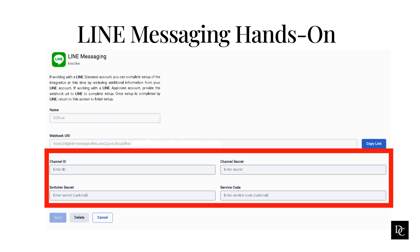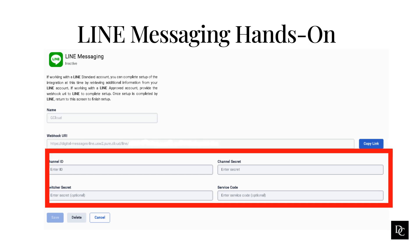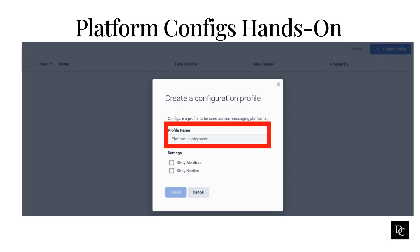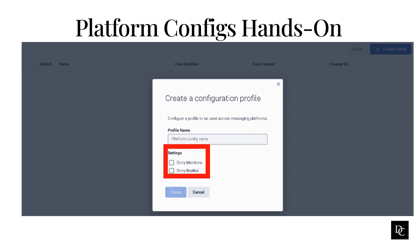Let's begin to get into this more by looking at the Platform Configs. Platform Configs allows you to use default settings across all messaging platforms, if available. Creating one is pretty straightforward. Under Message, click Platform Configs, then click Create Profile. Under Profile Name, enter a name. Under Settings, select Story Mentions, Story Replies, or Pull. Click Create. This will now allow you to add this profile to the platforms you have created, if applicable.